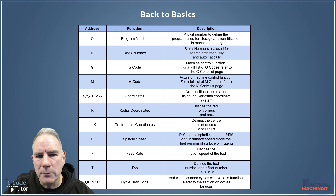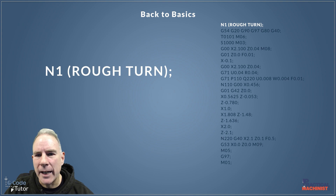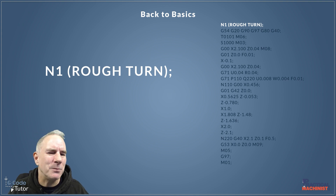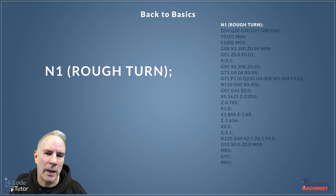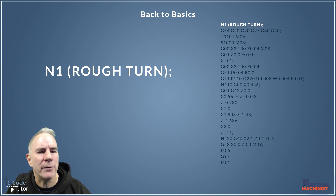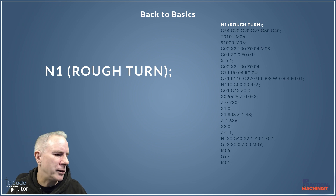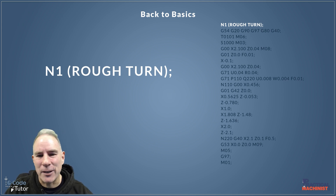Next up we have N, the block number. The block number is what we used to use to number each line of code. Now we tend to use them as a search function or as a way to call upon a part of the program, such as a subroutine. I always start off each sequence with an N number that matches my tool number — this makes it very easy to search on FANUC. We just type N1, press the down arrow on the FANUC controls and it will search to that section of code. A very good tip for scanning around your code quickly.